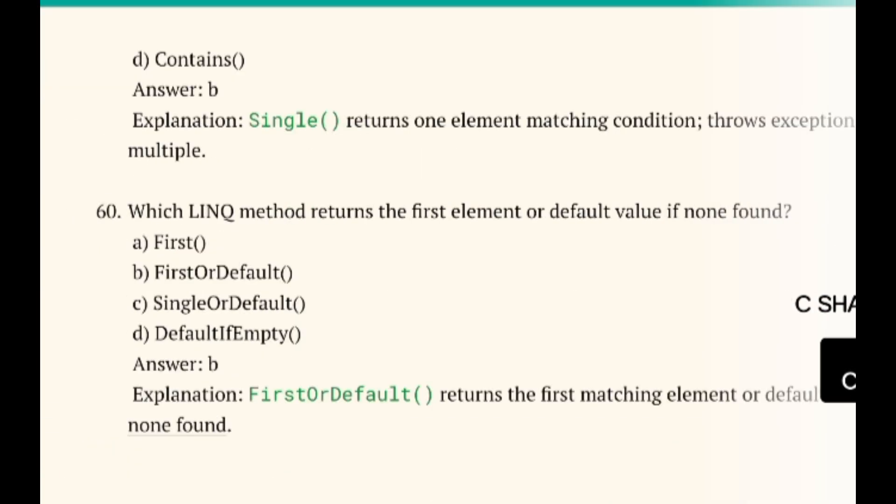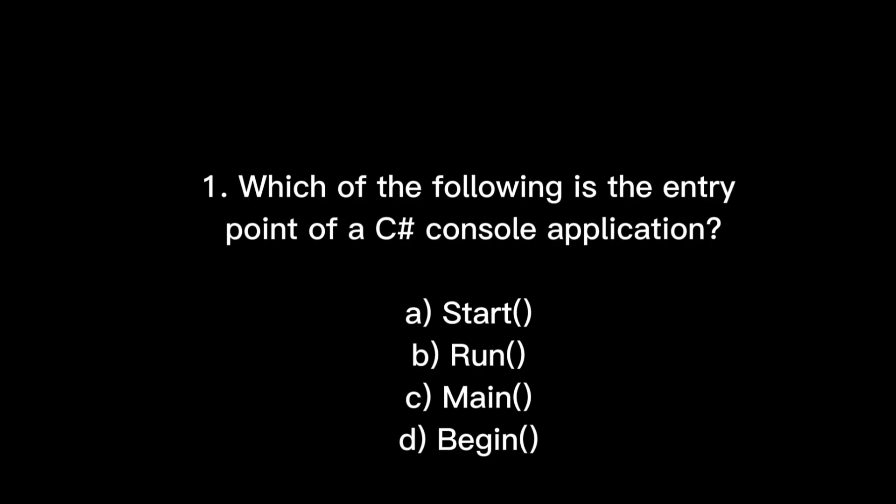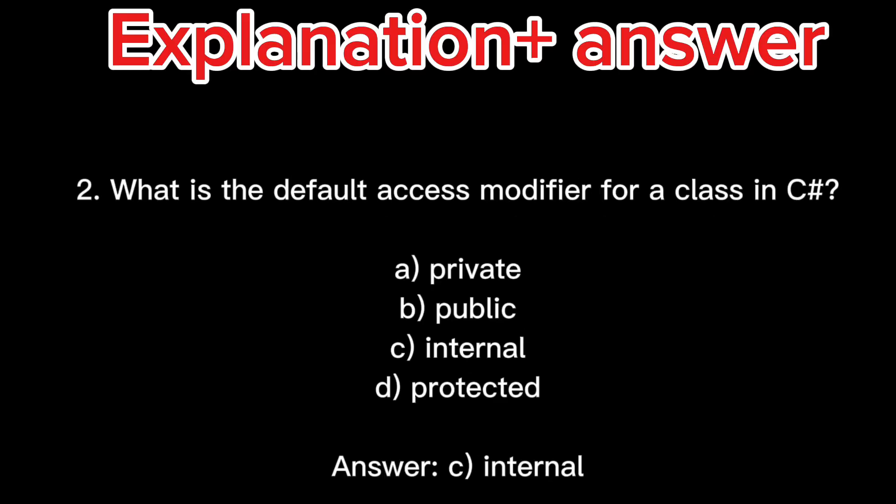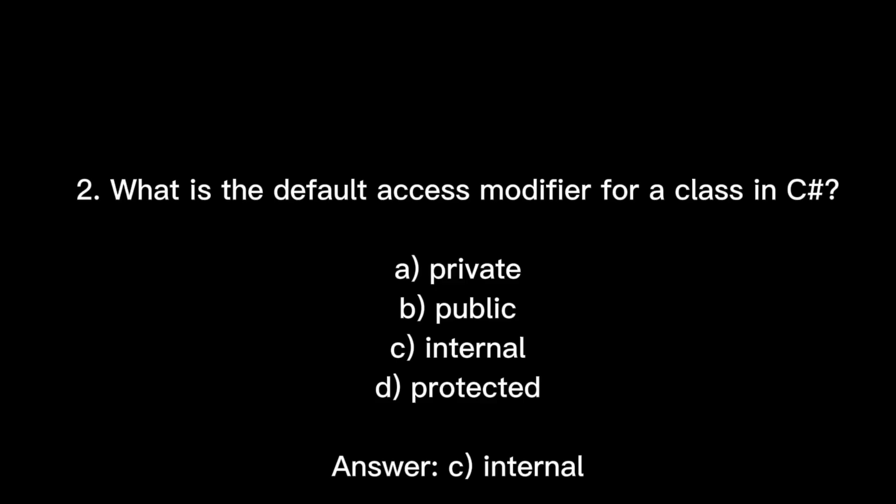Let's look at the MCQ questions. Question: What is the entry point of a C# console application? Whether Java or C#, the entry point is always the main method. Question: What is the default access modifier for a class in C#? Options are private, public, internal, protected. The correct answer is C — internal. We covered this in the theory section.